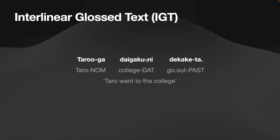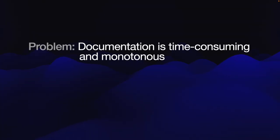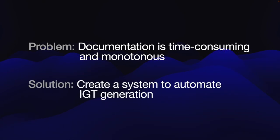The third line of IGT provides a translation of the sentence into English. One problem is that language documentation is time-consuming and monotonous, and for endangered languages, the number of native speakers who are available to do documentation is probably very low.